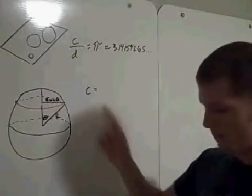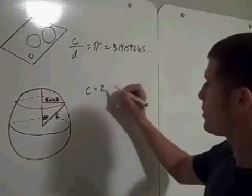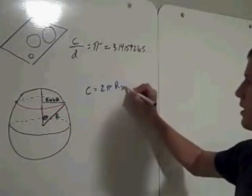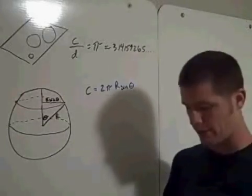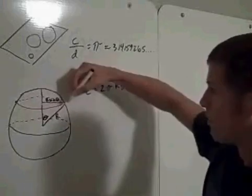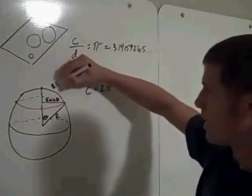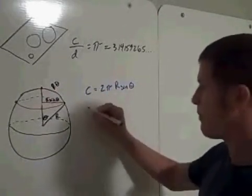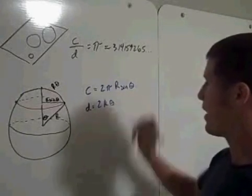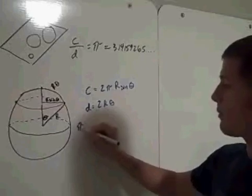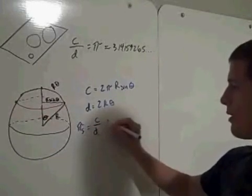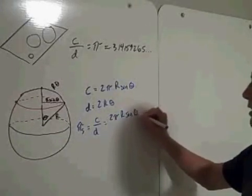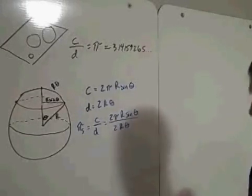The circumference is 2π times r, but r equals R·sin(θ), so the circumference is 2πR·sin(θ). The diameter along the surface from one side to the other is R·θ for one half, so the full diameter is 2R·θ. Therefore, spherical pi equals the circumference divided by the diameter, which is 2πR·sin(θ) divided by 2R·θ.